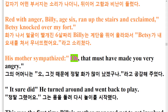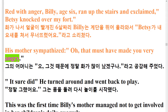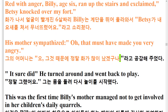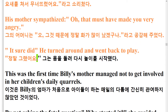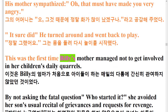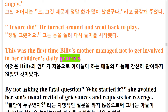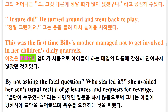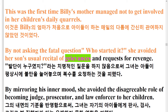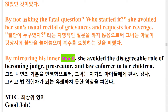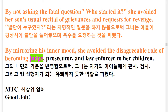His mother sympathized: 'Oh, that must have made you very angry.' He turned around and went back to play. This was the first time Billy's mother managed not to get involved in her children's daily quarrels. By not asking the fatal question 'who started it,' she avoided her son's usual recital of grievances and requests for revenge. By mirroring his inner mood, she avoided the disagreeable role of becoming judge, prosecutor, and law enforcer to her children.